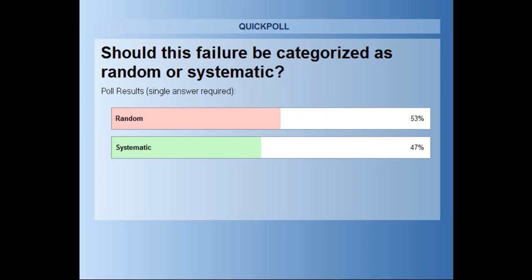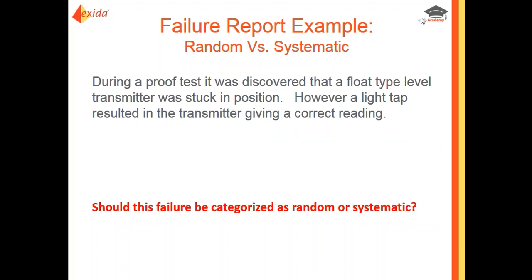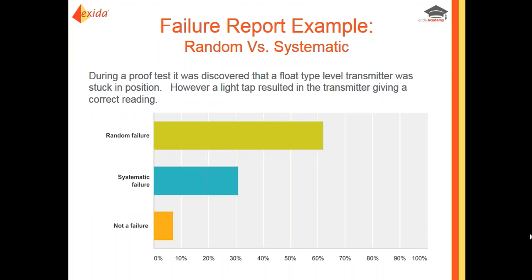In the ISA survey, over 60% said random failure, over 30% said systematic failure, and over 5% said this isn't a failure at all and should not be counted.